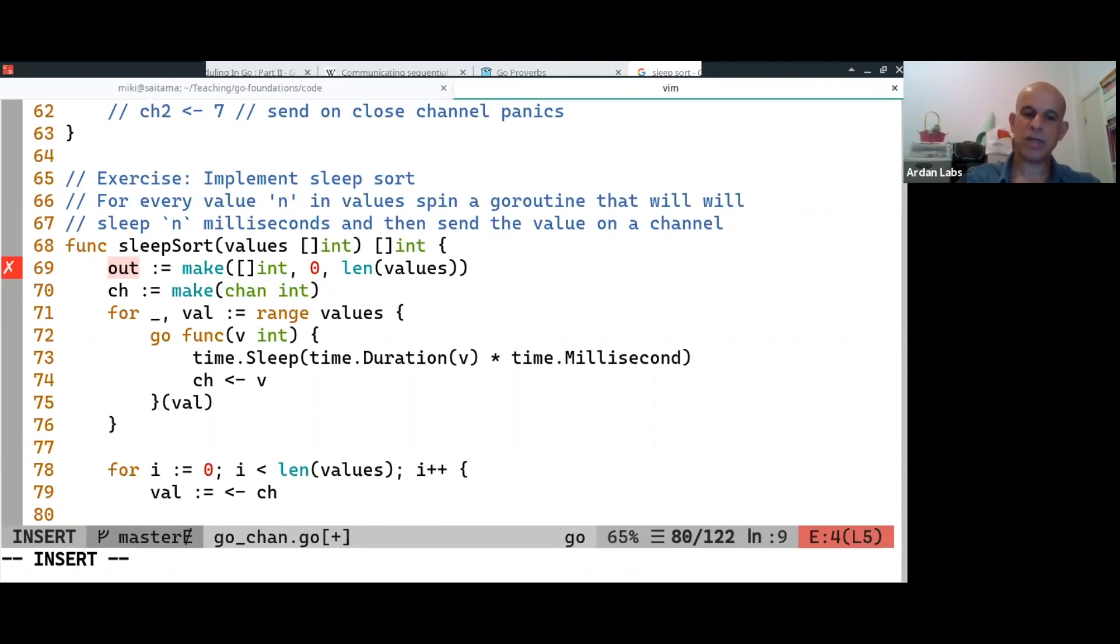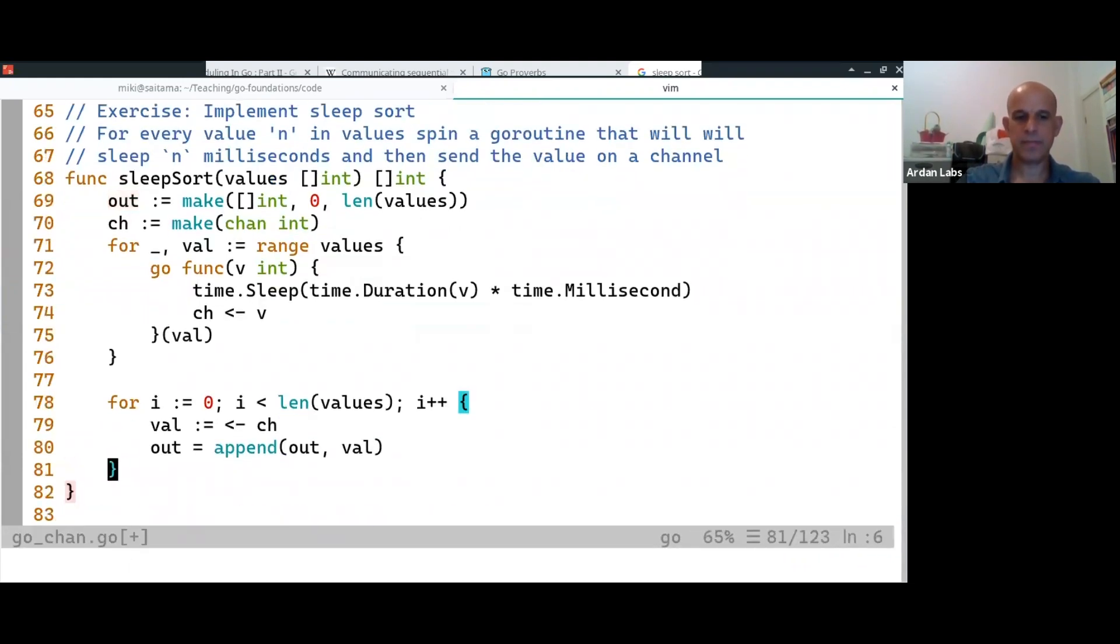I'm getting the channel, and then out equals append out and value. And finally, I'm going to return the output.